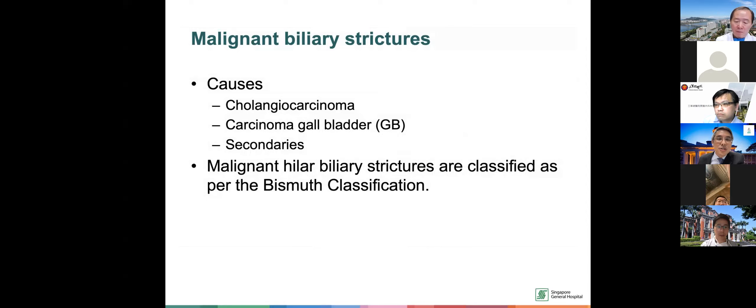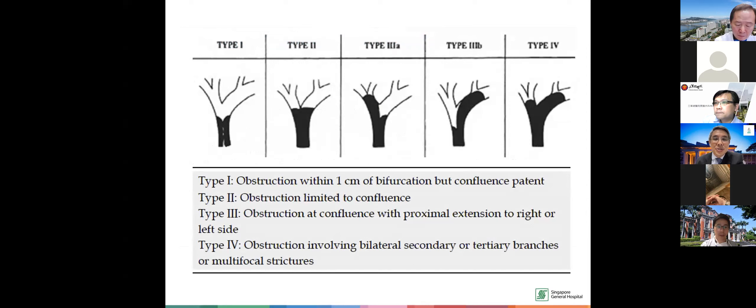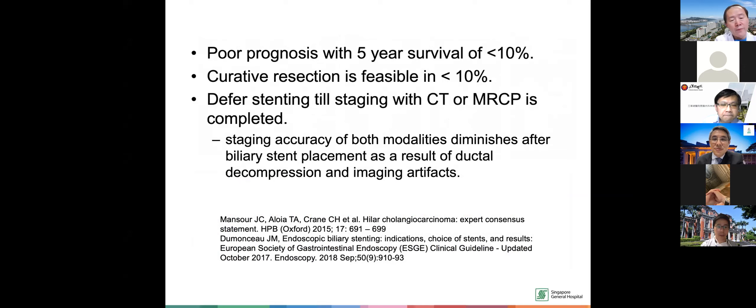Malignant strictures also have the Bismuth classification, slightly different now because we have type 3A and 3B — type 3A referring to extension into the right duct, and type 3B to the left main duct. The prognosis for hilar strictures is very poor — less than 10% survival at 5 years, and less than 10% actually make it to curative resection. The recommendation is to do a staging CT scan or MRCP before stenting, because once you stent a patient, it affects images due to artifacts, aerobilia, or decompression of ducts.